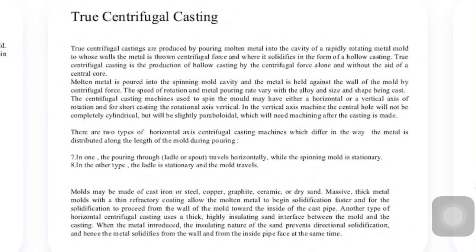The centrifugal casting machine used to spin the mold may have either a horizontal or vertical axis of rotation. For a short casting, the rotational axis is vertical. In a vertical axis machine, the central hole will not be completely cylindrical but slightly paraboloidal, which will need machining after the casting is made.